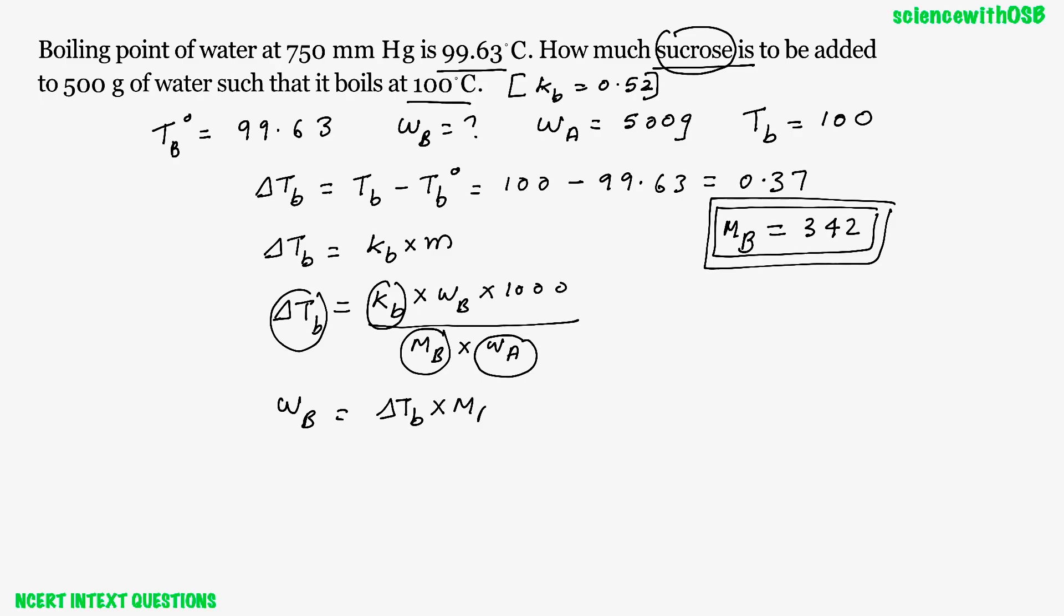KB into 1000. All values are given, right? Substitute it. 0.37, what is MB? 342. What is WA? 500. What is KB? 0.52 into 1000. On calculating you will be getting 121.67, approximately 122 gram.